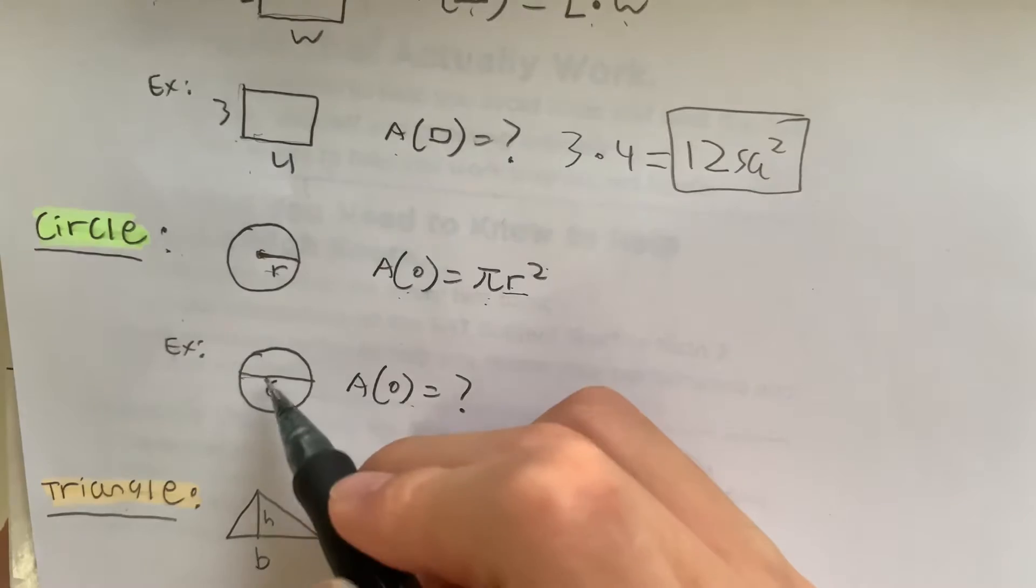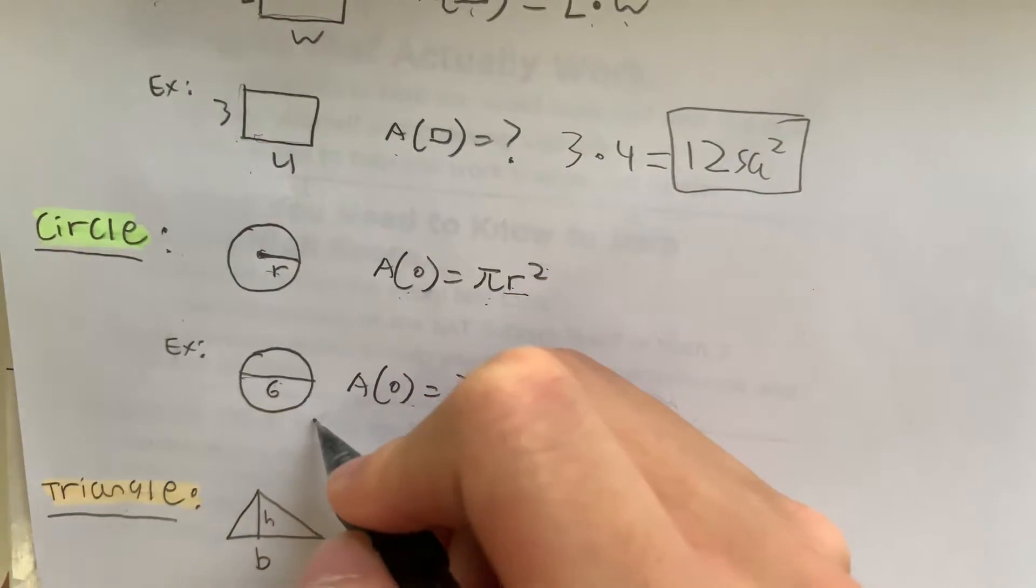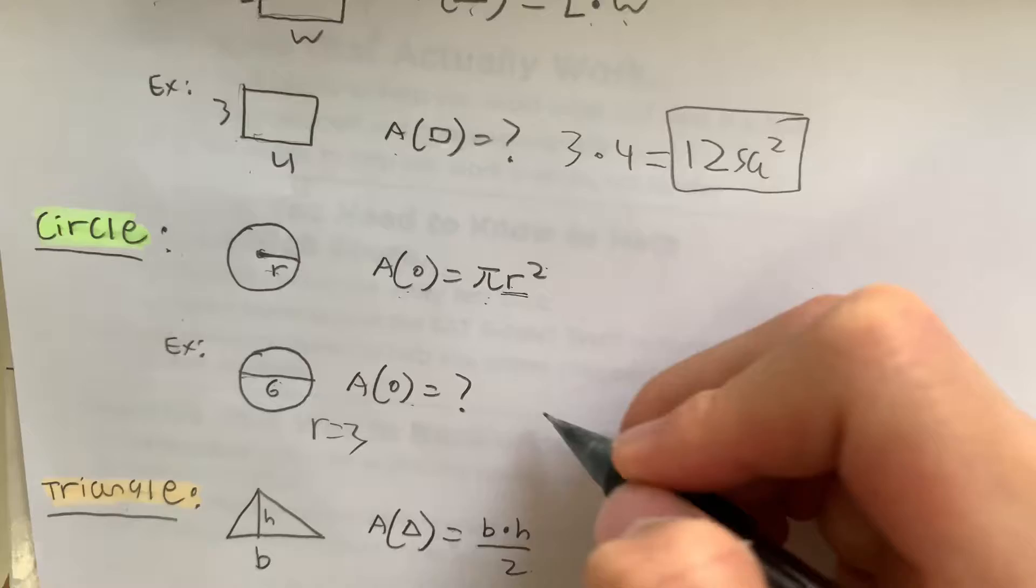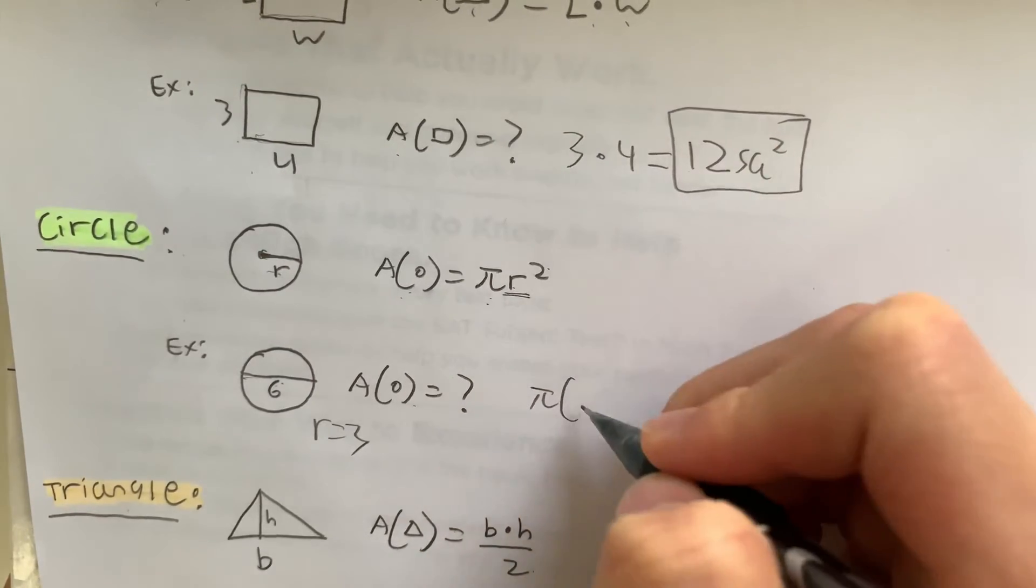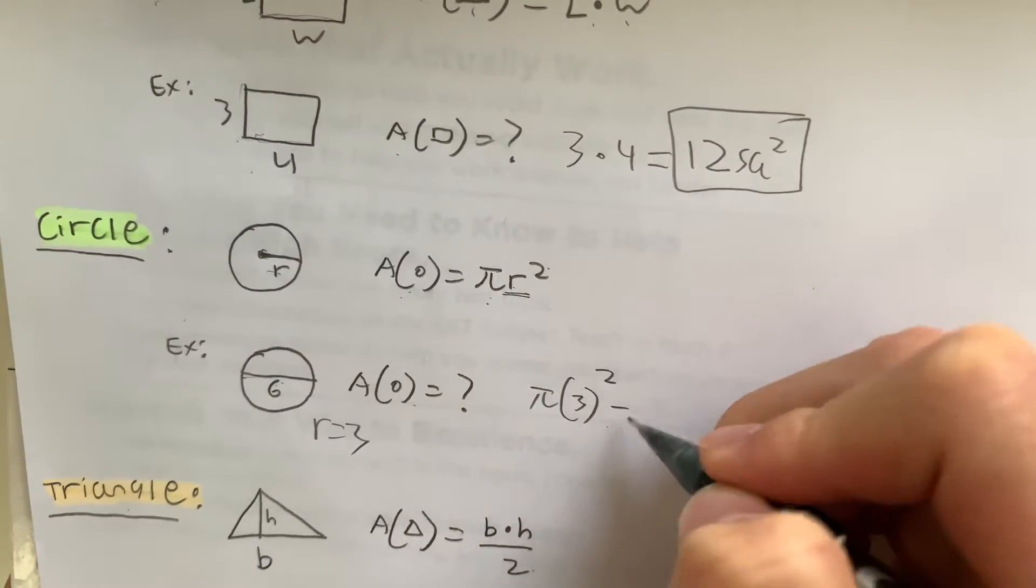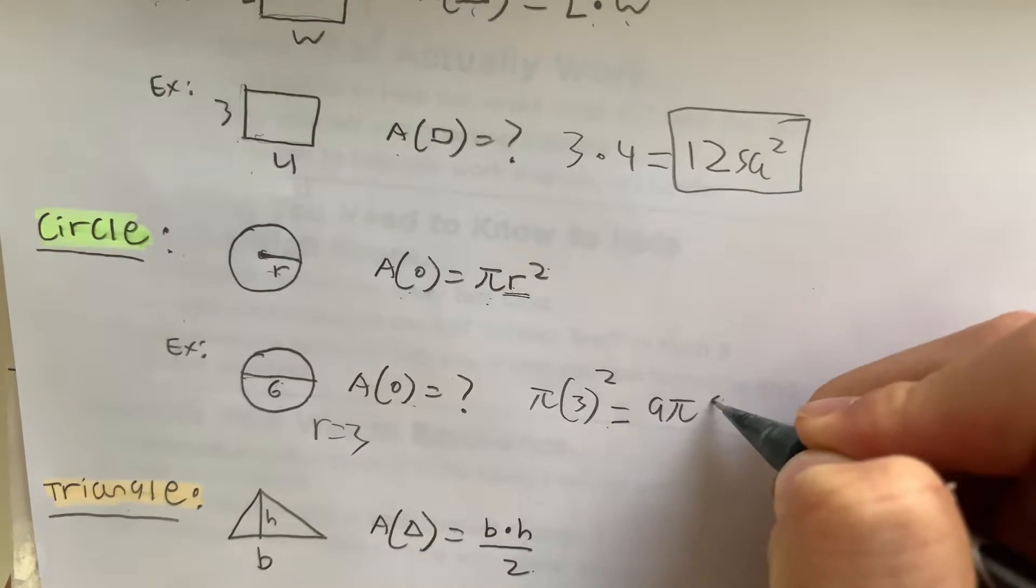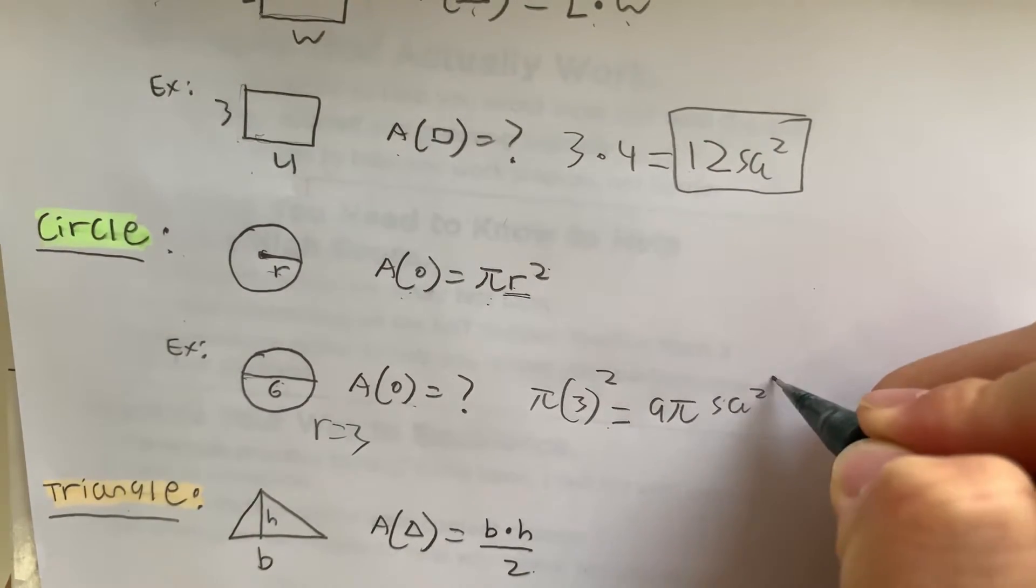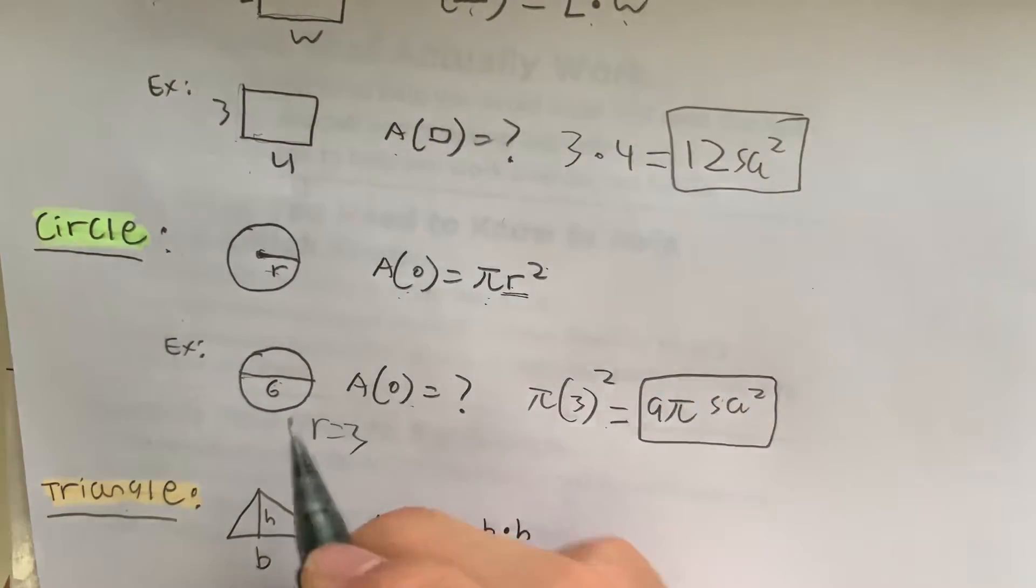Well, if the diameter is 6, then the radius is 3. Let's plug it into the formula. So it's pi times 3 squared. That equals 9 pi. 9 pi square units is going to be the area of this circle.